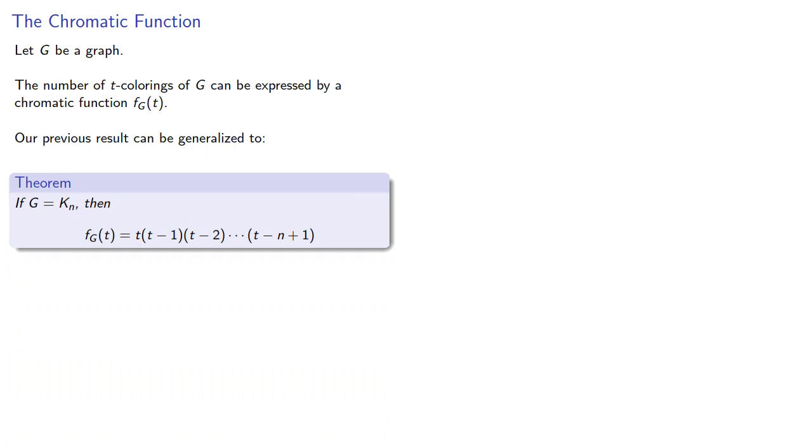If our graph is Kn, then f sub g of t is... Now this is a polynomial, but note that the factors of this polynomial look like the factors of a factorial, and so this is sometimes referred to as the descending factorial polynomial.